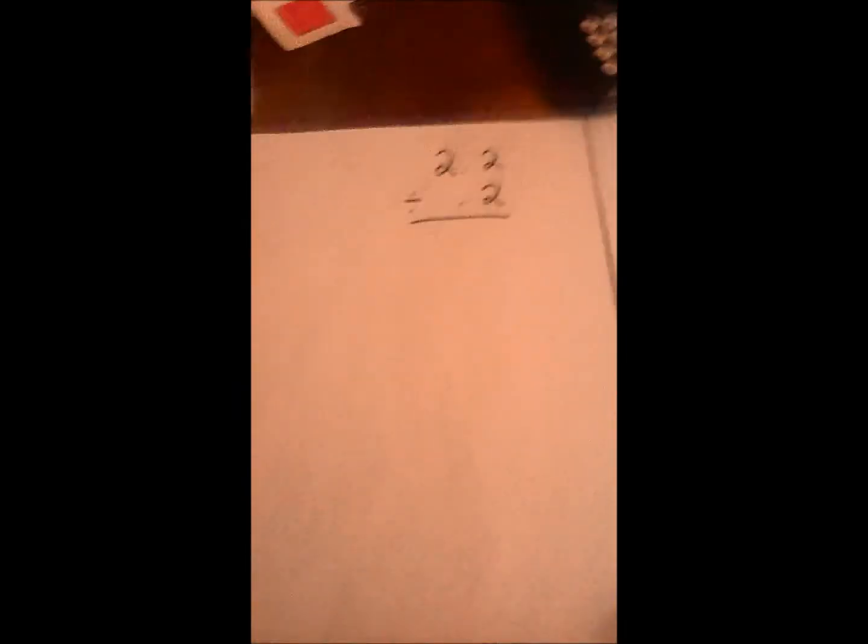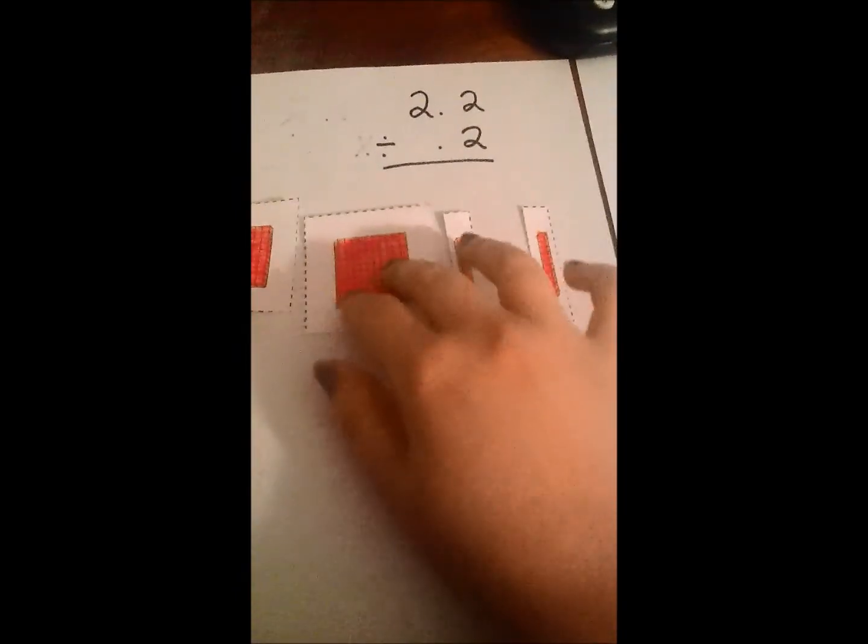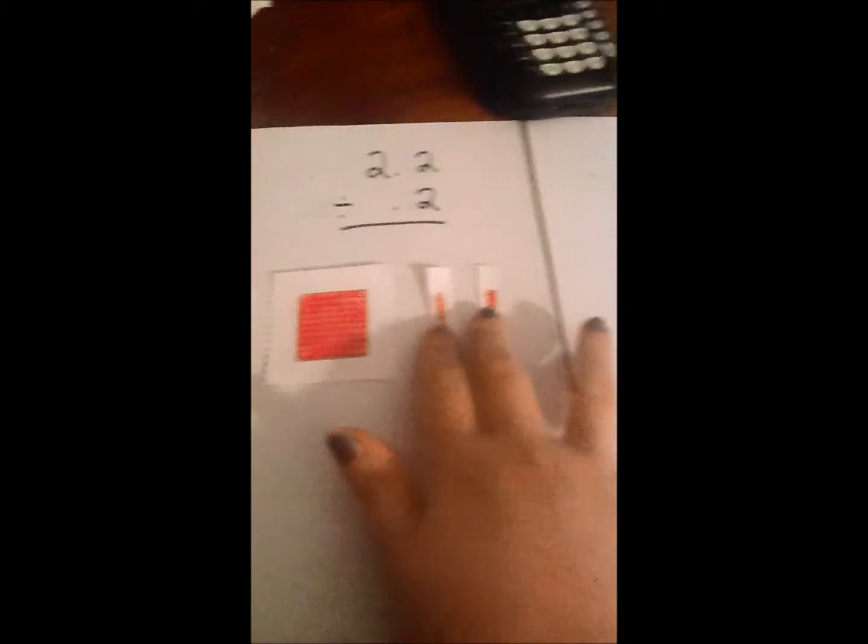Finally, we're going to do division, and we're going to do 2.2 divided by 0.2. So we're going to do 2 flats and 2 longs to show 2.2, and then we're going to split this into groups of 0.2, so 2 longs.